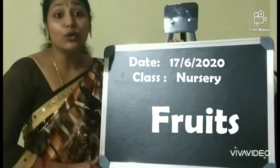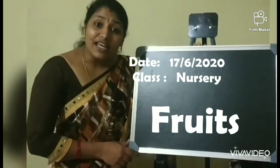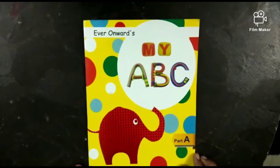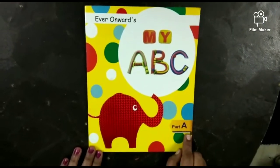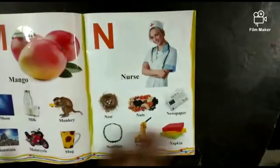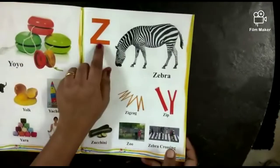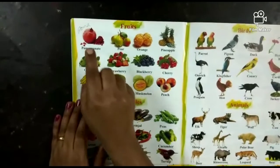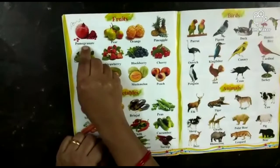Now you all know what are fruits and their names. Every day you have to eat fruits. Okay children? Now open your ABC book. Go to the last page, after Z. Fruits. Show them the picture of the fruit and teach the name of the fruit.